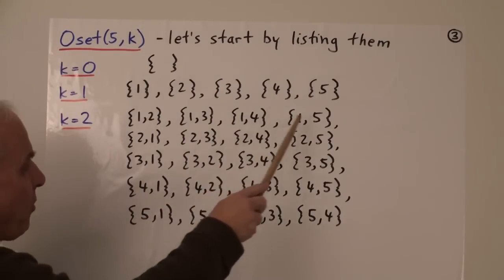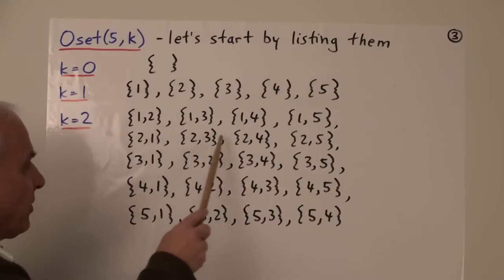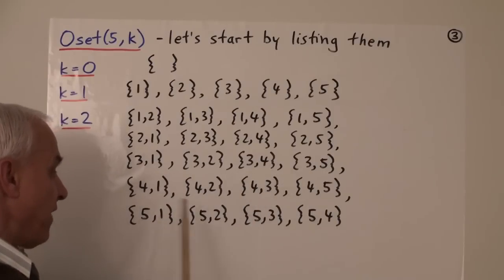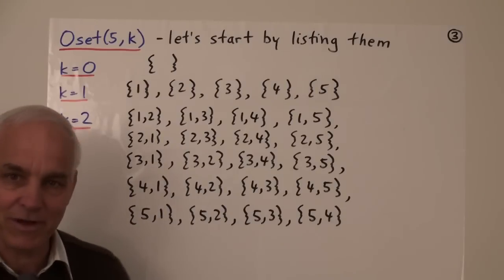When k equals 2 we have these possibilities: {1,2}, {1,3}, {1,4}, {1,5}, {2,1}, {2,3}, {2,4}, {2,5}, {3,1}, {3,2}, {3,4}, {3,5}, {4,1}, {4,2}, {4,3}, {4,5}, and {5,1}, {5,2}, {5,3}, {5,4}. A total of 20 different possibilities.